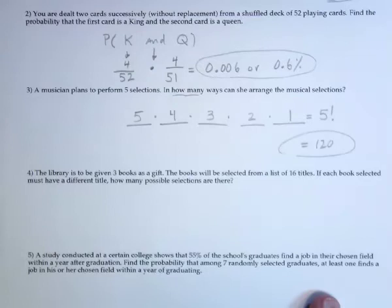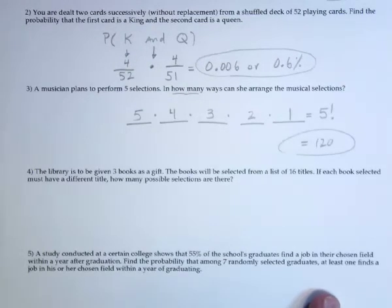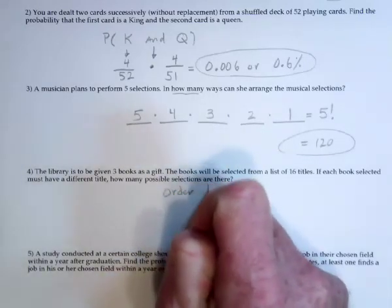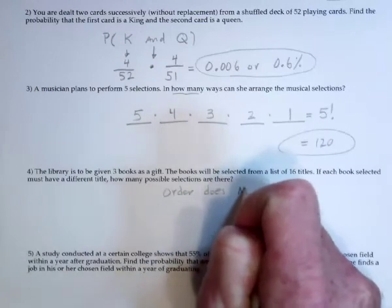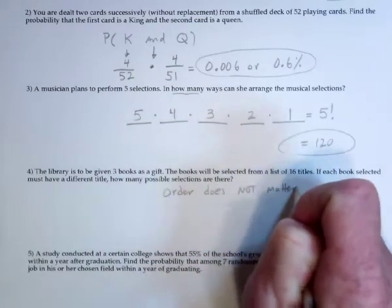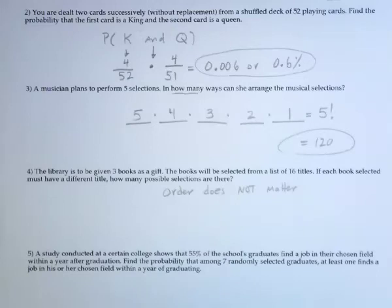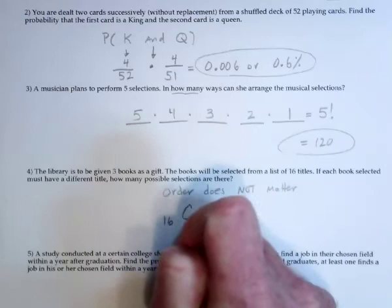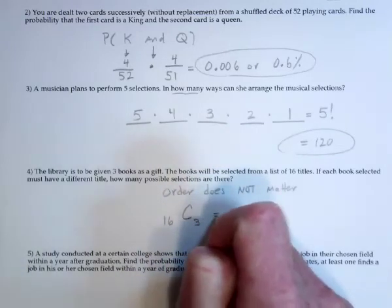For number four, the library is going to be given these three books as a gift out of a group of 16 titles. Does the order matter? When the person hands the librarian these three books, does the order that the three books are in matter? No, so order does not matter. If order does not matter, then we've only got one way to do it, and that's using combinations.